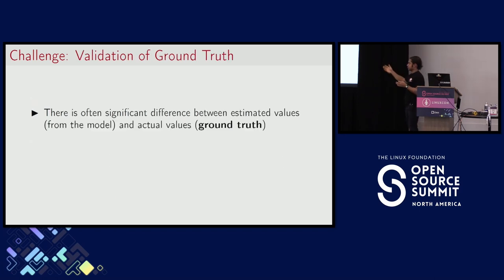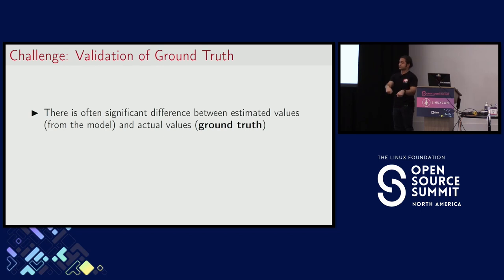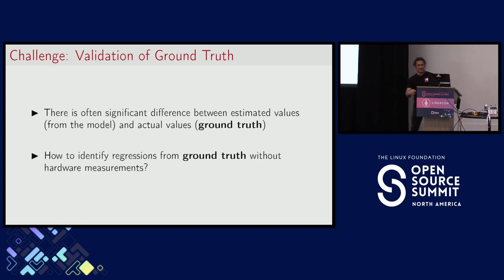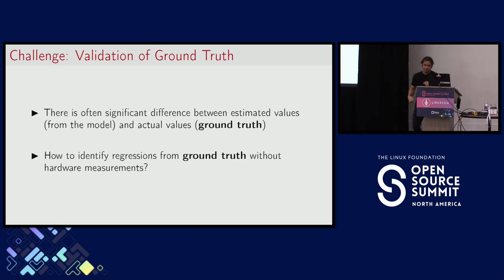Third challenge: validation of ground truth. For our experiments we validated predicted values with hardware measurements — we took a multimeter, probed into the wire, ran the same experiment again, and obtained actual hardware readings. That is one reasonable way to validate. But if this model is deployed at larger scale, I simply cannot go to every device in the world and probe it manually. We want clever ways to identify regressions from the ground truth without hardware measurement support.